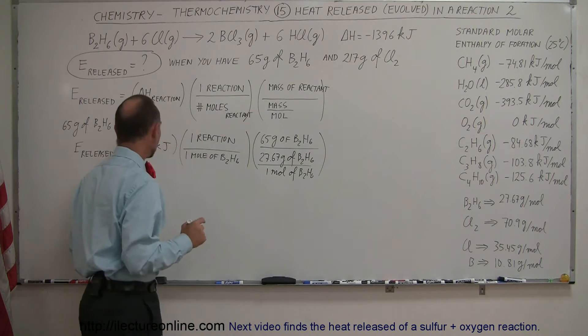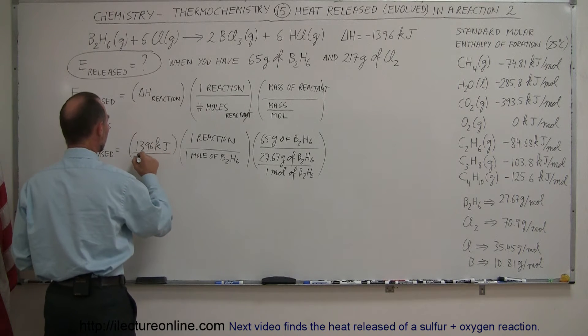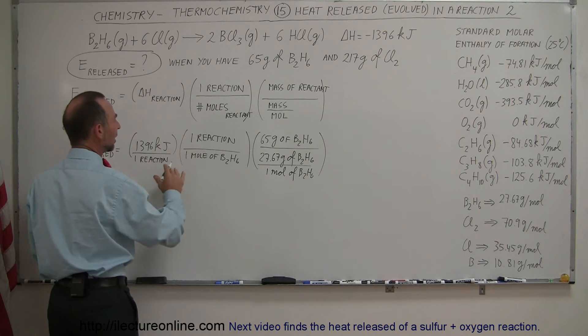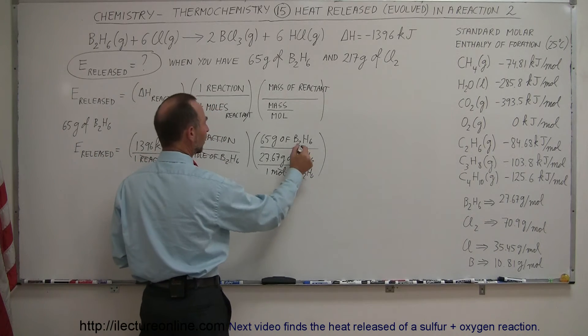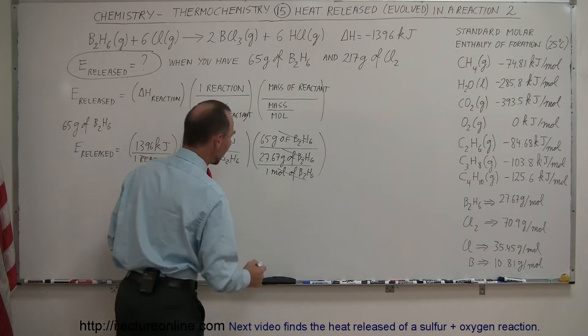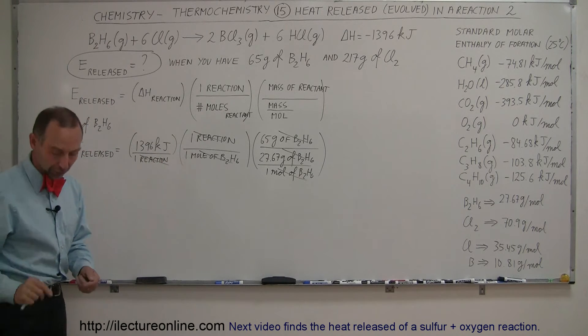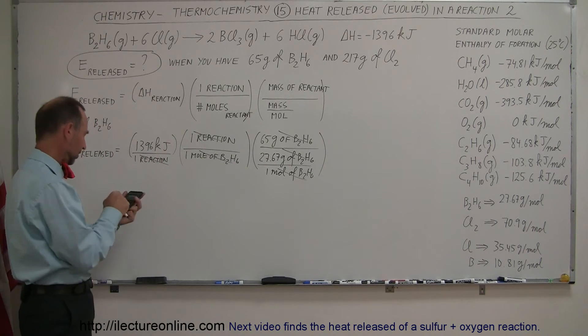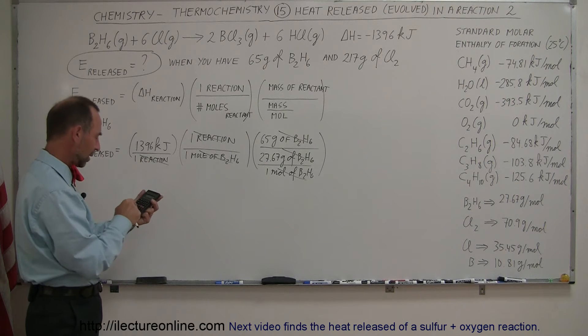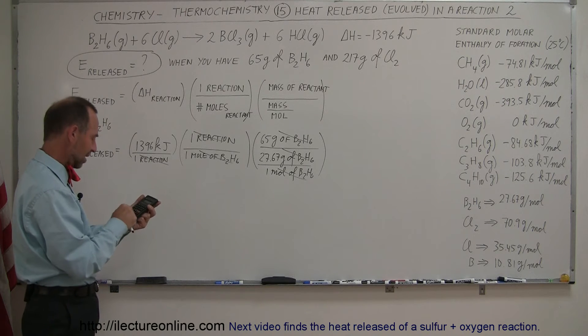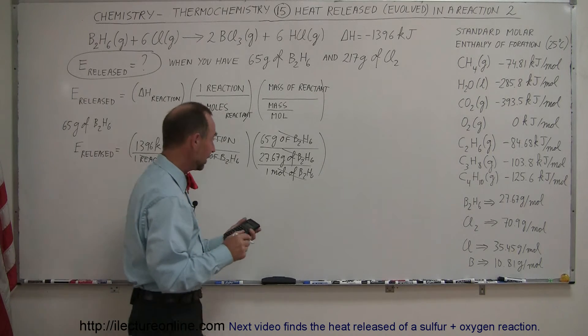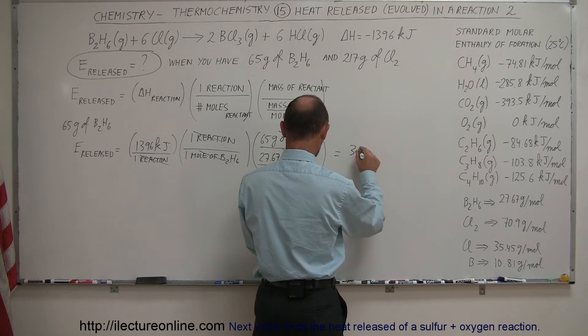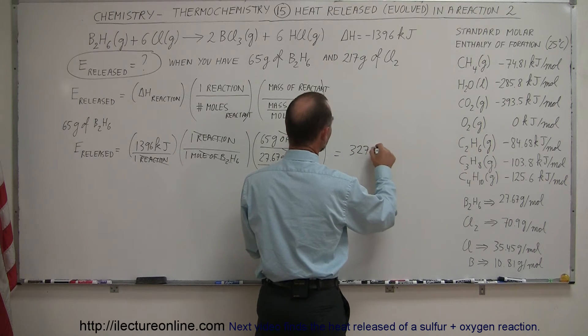You notice if we write it like this - and I should put this as so many kilojoules per one reaction - then you can see that the units just come out really nicely. Reaction cancels out, moles of diborane cancels out, and grams of diborane cancels out. All you have left is numbers and the units of kilojoules. We need a calculator for this: 1,396 multiplied times 65 and divided by 27.67 equals, and that will release 3,279 kilojoules.